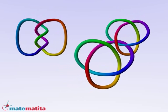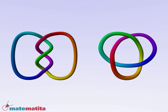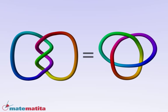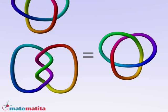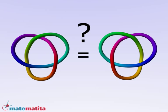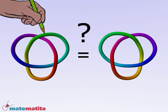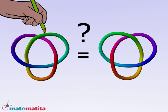This knot is called trefoil. As before, we can ask, is the trefoil the same as its mirror image? In fact, this is a very technical and difficult problem. Actually, the two knots are not the same. They are called left hand and right hand trefoil.